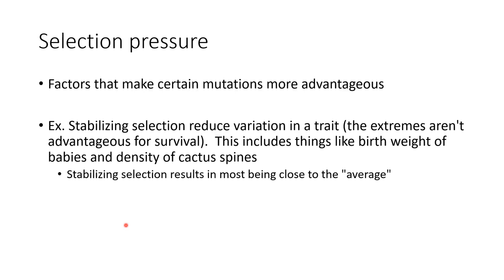With natural selection, there are different types of selective pressure that describe what type of trait becomes more advantageous. There are three types: stabilizing selection, disruptive selection, and directional selection. They're all forms of natural selection, but the type of trait that becomes more advantageous differs between them.